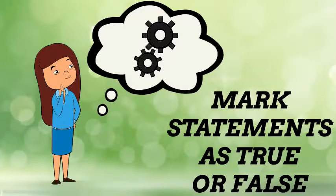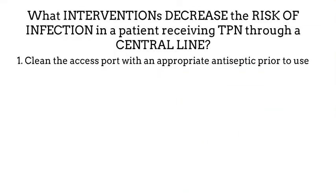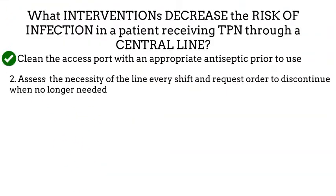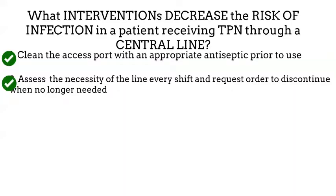In step three, we look at each statement and decide if it's true or false. Number one: clean the access port with an appropriate antiseptic prior to use. This is an intervention we perform to reduce the risk of infection from a central line, so we mark this as true. Number two: assess the necessity of the line every shift and request an order to discontinue when no longer needed. The longer a central line is in place, the higher the risk for infection, so we want it out as soon as it isn't needed. We mark this as true.